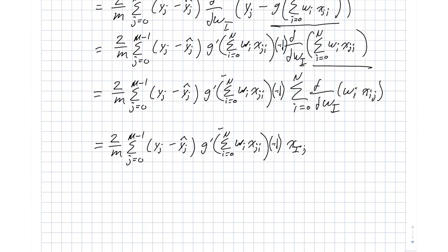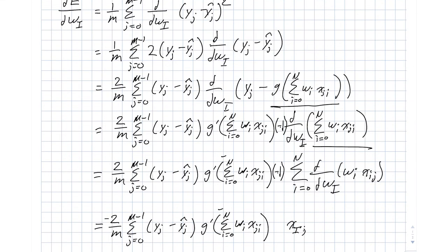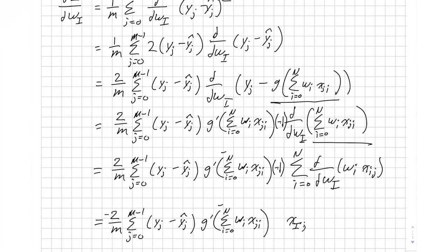And that small piece is x capital I j. One thing I'm going to do is go ahead and pull this negative one out of the sum, since it applies to all terms in the sum. And that makes things a little bit simpler. So what we ended up with here is an expression that talks about how the error is going to change as we change this w big i.